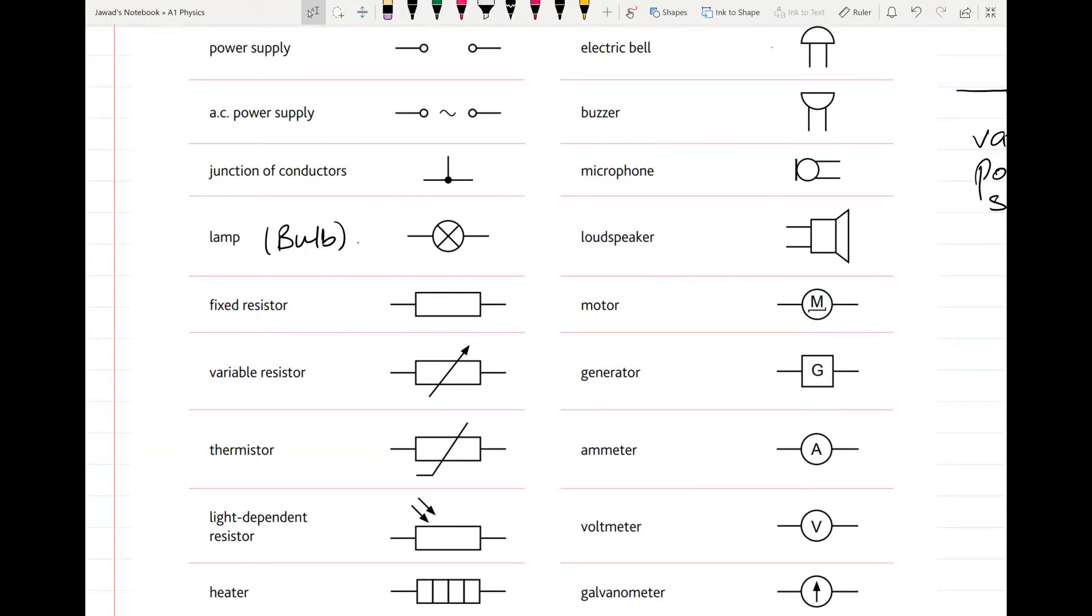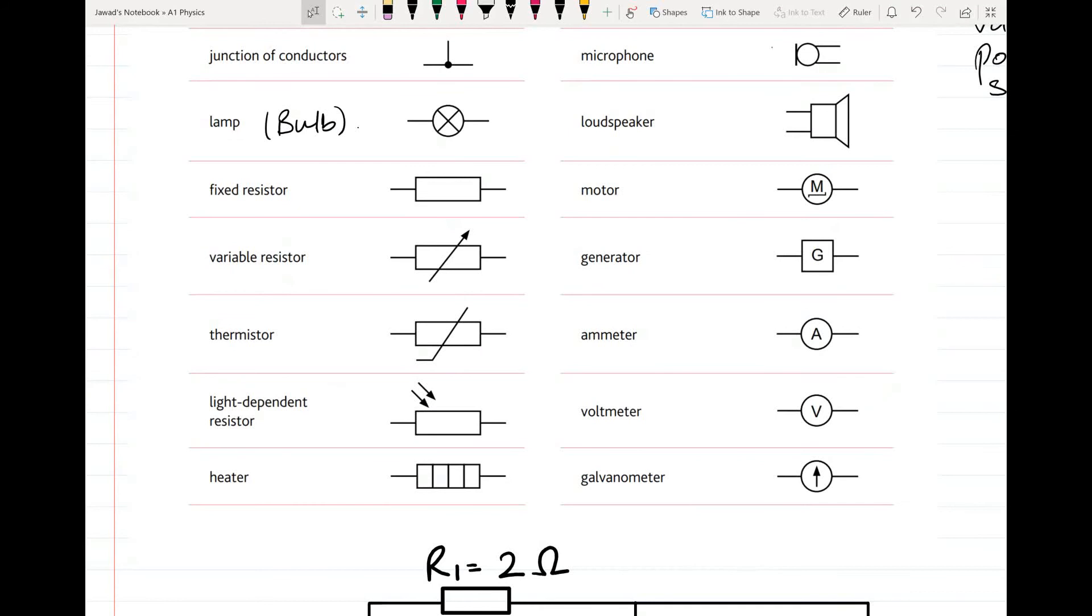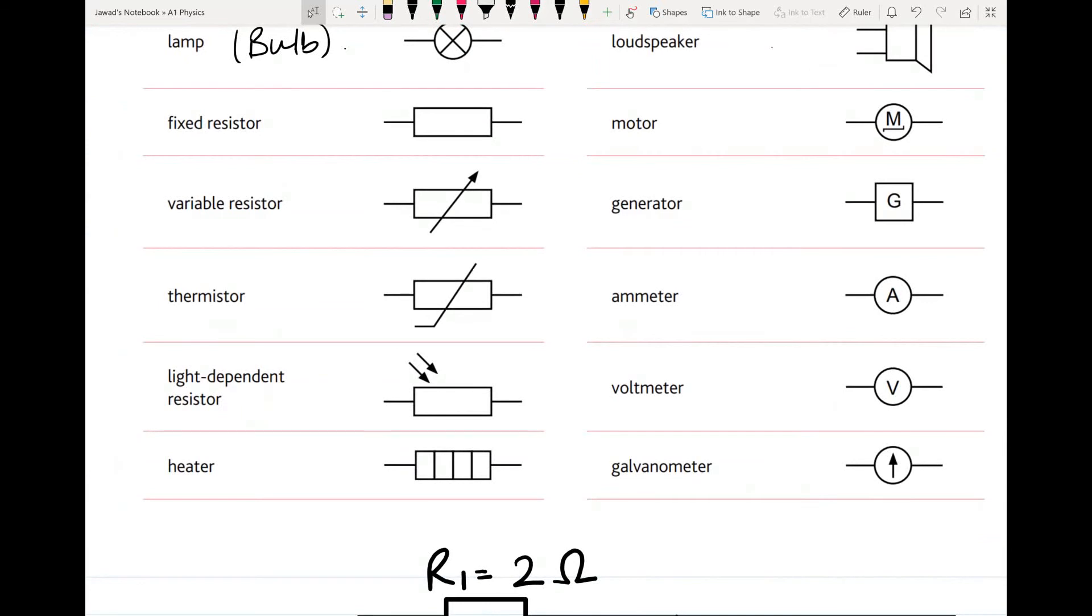Then there is variable resistor - you can vary it as you wish, you can adjust its resistance. Then there is thermistor. We have studied thermistor in detail. Thermistor's resistance depends upon temperature. Then there is light dependent resistor. Once again, its resistance depends upon light. Then there is heater - remember this symbol carefully. This is the heater symbol, not the color code resistor symbol.